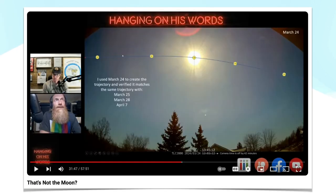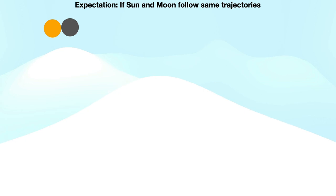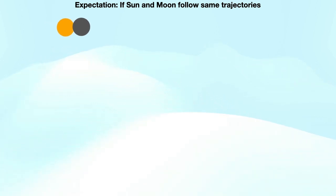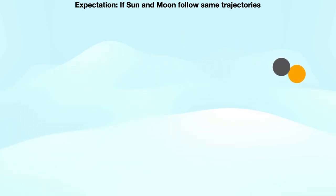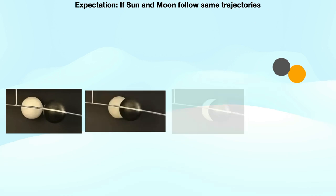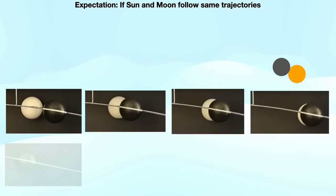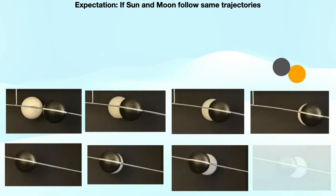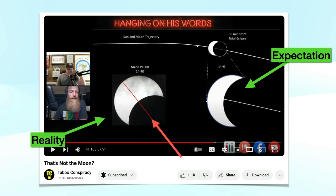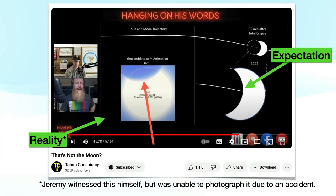His basic premise is that since the sun and moon traced identical paths across the sky, and during the eclipse the sun catches up to the moon, then the pattern should be in line with the sun-moon trajectory. Our expectation would be that the eclipse pattern should have been like this, and the physical wood and steel model shows the pattern to be similar. Yet reality showed this and this.